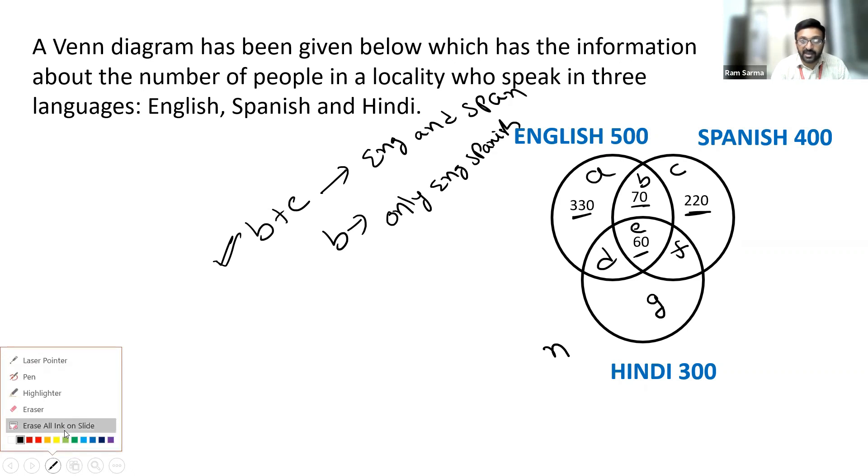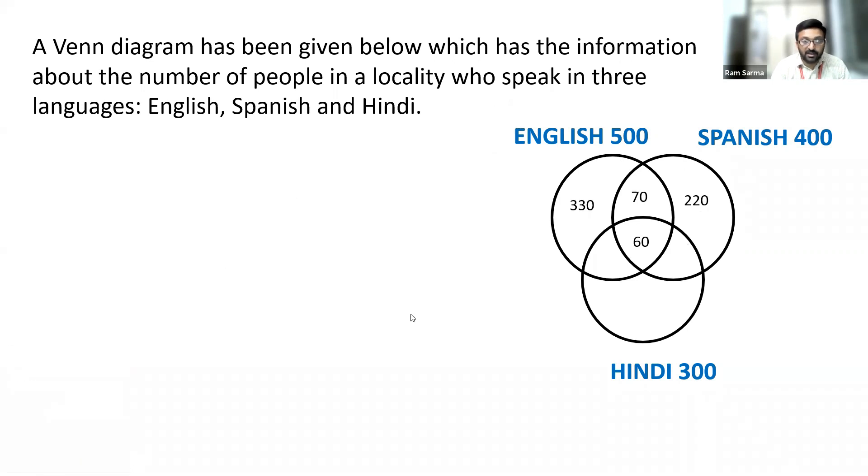Now, let me erase the ink on the screen. Now, we have to find the values of these things. I know that sum of all these things is 500. So 330, 70, 60 and let it be X now. Sum of these values should give you 500. 330 plus 70 is 400. 400 plus 60 is 460. So X is equal to 40.